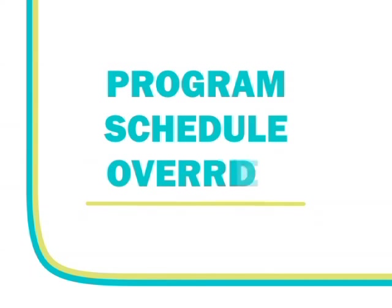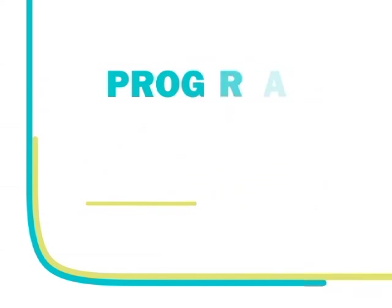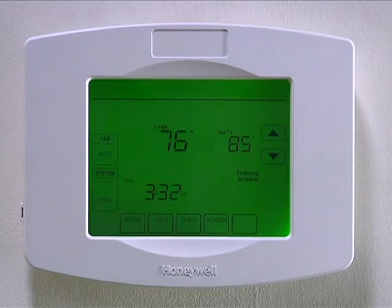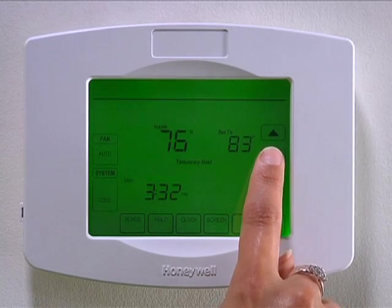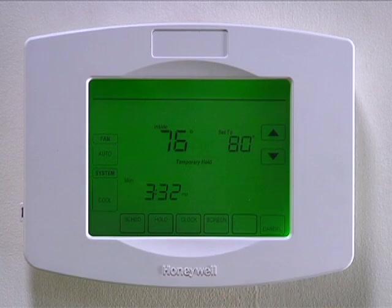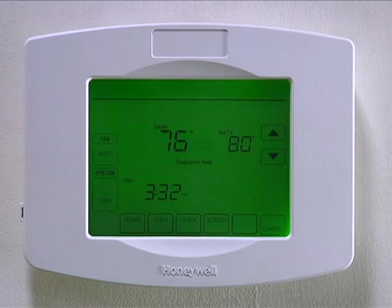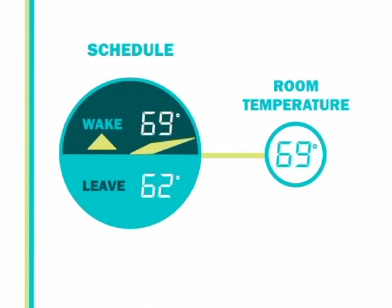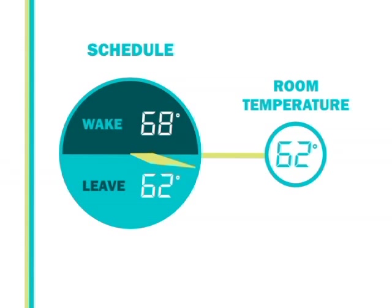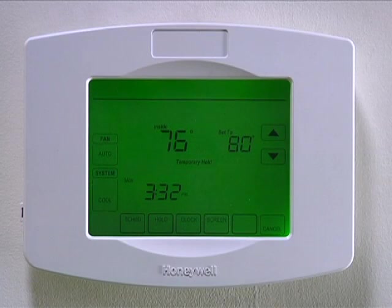You can temporarily or permanently override the programmed schedule. To temporarily override the programmed temperature, press the up or down arrow to adjust the set temperature. This will adjust the temperature setting for the time period that the smart thermostat is currently in, and will be the temperature setting until the next scheduled time period change occurs. For example, if you increase the temperature setting in wake mode, the temperature will automatically return to the programmed setting when the leave time period occurs. To cancel the temporary override, press cancel and the program schedule will resume.